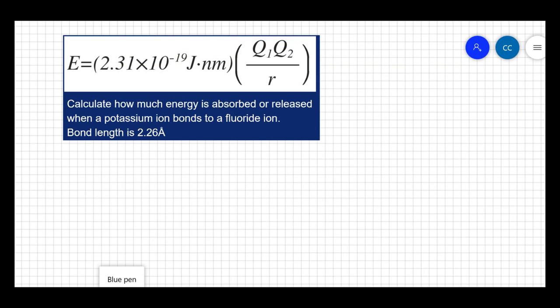Potassium fluoride is KF, which means the two things that are bonding together are a K plus ion and an F minus ion. And then this angstrom, or angstrom, is not an SI unit.